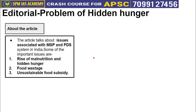The MSP covers 26 notified food crops procured from the farmer, and this price is announced even before the sowing season. The government agency FCI procures food like rice and wheat and then distributes it to needy and poor people through PDS shops. However, there are challenges in the implementation of this system.